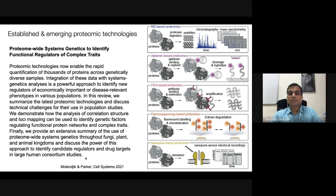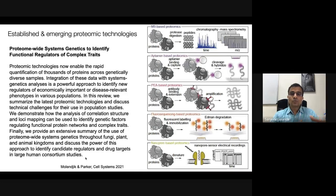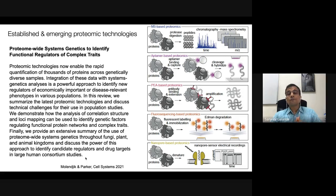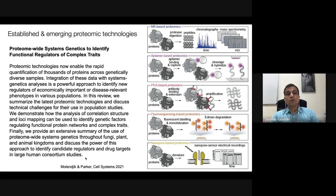A nice recent review published in Cell Systems discusses established and emerging proteomic technologies, combining genetics and genomics to proteomics. The paper's title was 'Proteomic and systems genetics to identify functional regulators of complex traits.' Through genetics we can understand the genetics of complex traits, but we also need to understand how genetic changes affect the function of a protein.